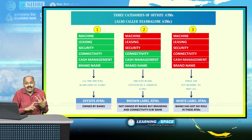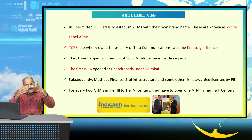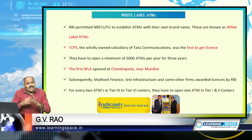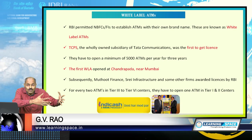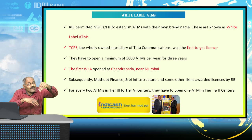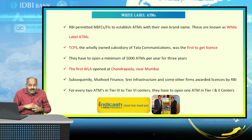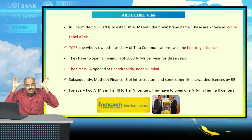White label ATMs impose charges on customers for each transaction. White label ATMs include brands such as India One and IndyCash, with IndyCash established by Tata Communications. The first white label ATM in the country was opened in Chandrapada village near Mumbai. There is also a stipulation that white label ATM operators must open two ATMs in Tier 3 to Tier 6 centers for every one ATM in Tier 1 or Tier 2 centers, ensuring a ratio between rural and urban area coverage.